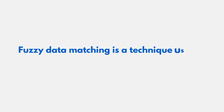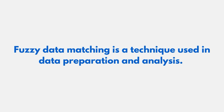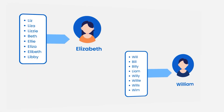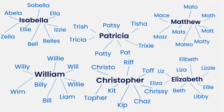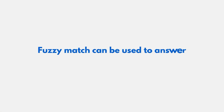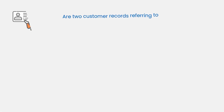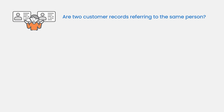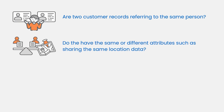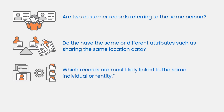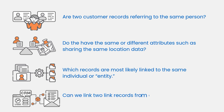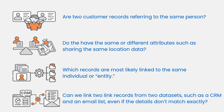Fuzzy match is a technique used in data preparation and analysis. It identifies and matches similar or potentially similar records in data sets. Fuzzy match can be used to answer questions like: are two customer records referring to the same person? Do they have the same or different attributes, such as location data or phone numbers? Which records are most likely linked to the same individual?